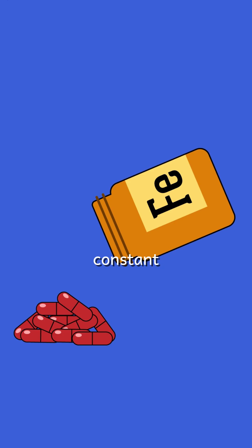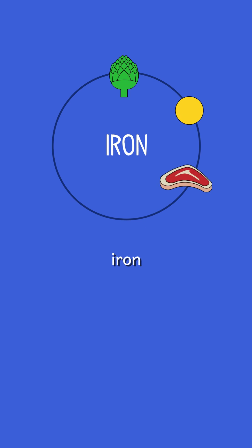And in order to keep it constant, you have to have these ferritin molecules or these storages of iron where you can put some more iron from the solution or take out the iron to keep the concentration level constant.